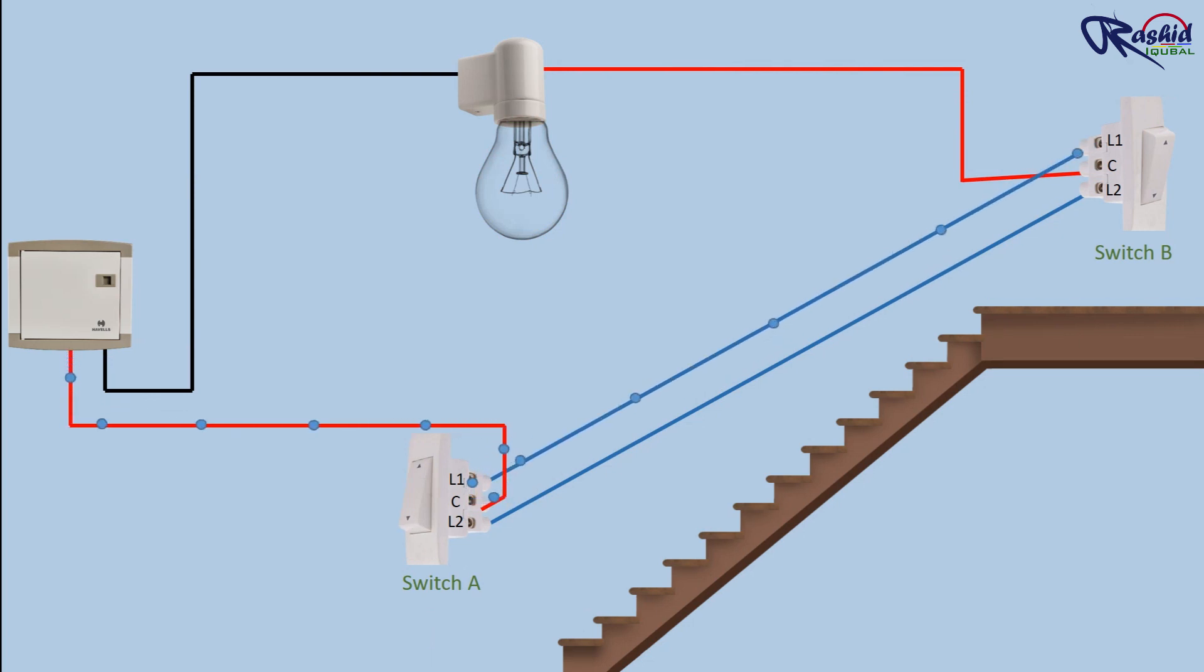We could flip switch A again to complete the circuit, or we can flip switch B and the circuit is also complete. So we can therefore flip either switch A or switch B to make or break the circuit and thus control the light fitting with two switches.